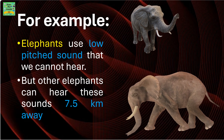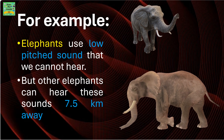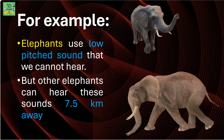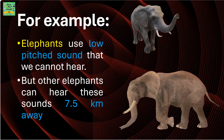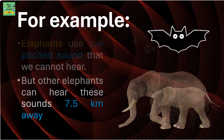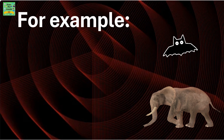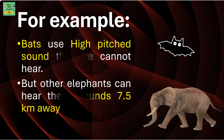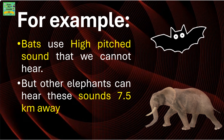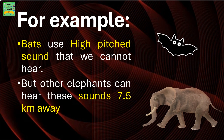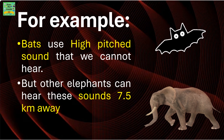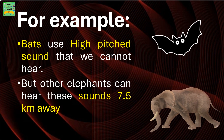For example, elephants use low-pitched sounds that we cannot hear, but some elephants can hear these sounds 7.5 km away. Bats use high-pitched sounds that we cannot hear, but other bats can hear these sounds 7.5 km away.